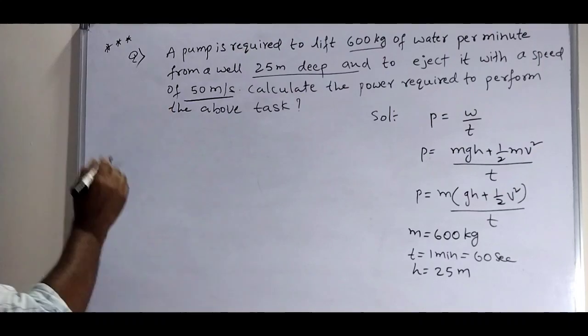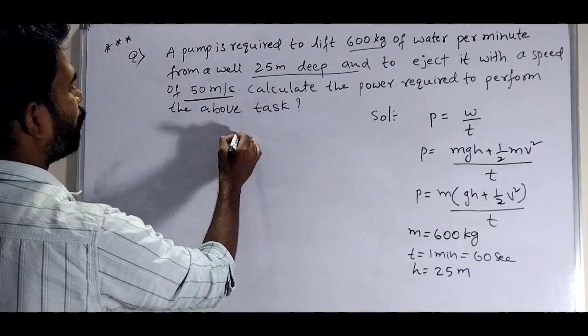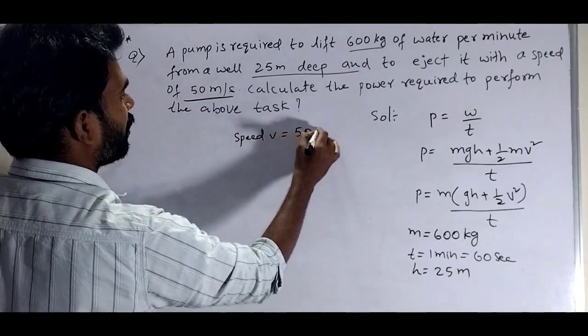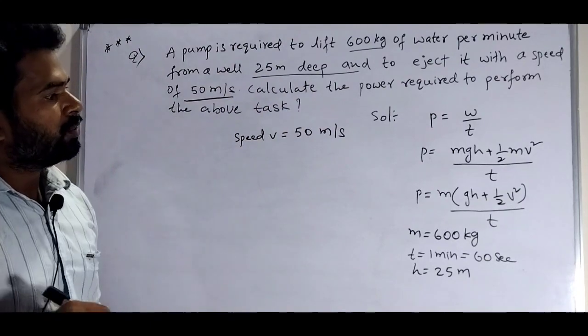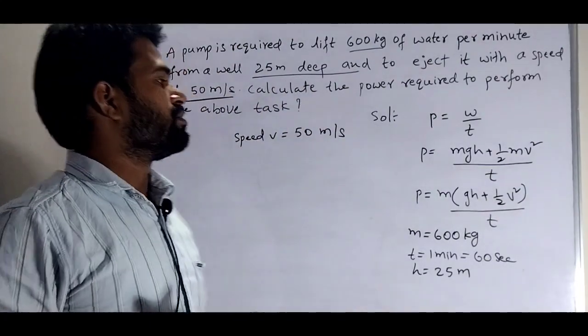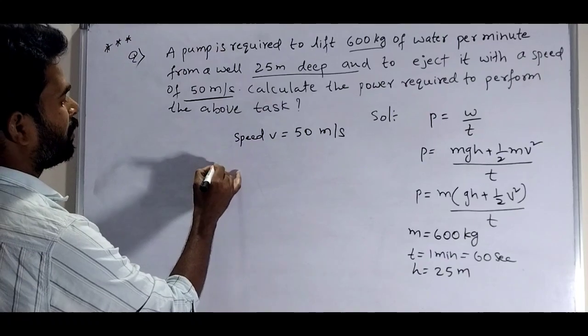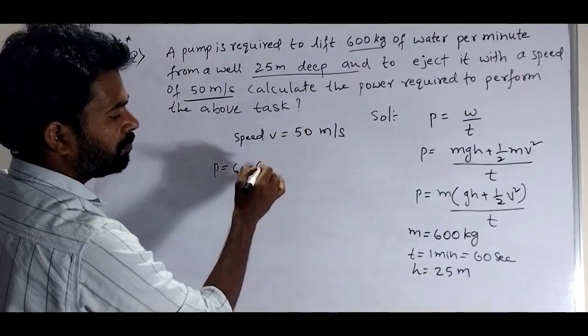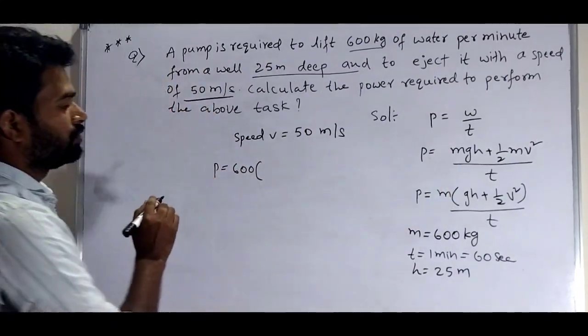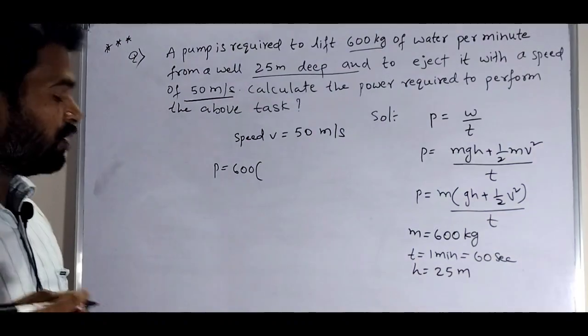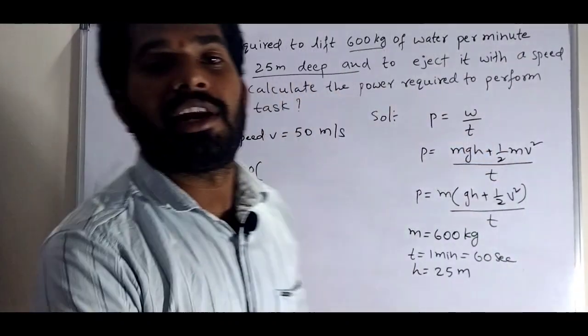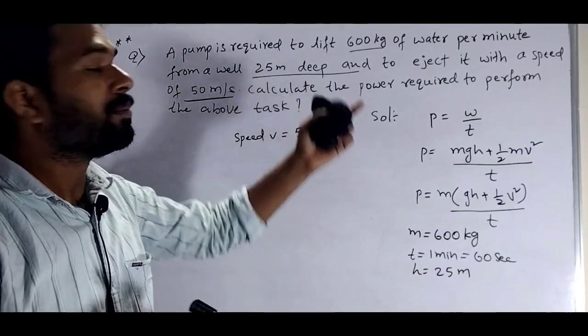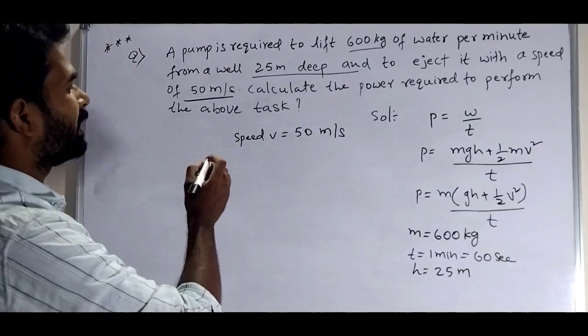Speed V equals 50 meter per second. G, the acceleration due to gravity, we'll take the value as G equals 10 meter per second square.